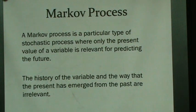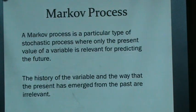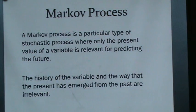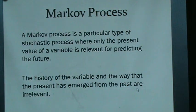A Markov process is a particular type of stochastic process where only the present value of a variable is relevant for predicting the future. An example of something that is NOT a Markov process is if you look at the last three days of weather to predict tomorrow's — that requires past history. In a true Markov process, all you need is your current state — today's weather — to predict tomorrow's. You don't have to go back into the past.